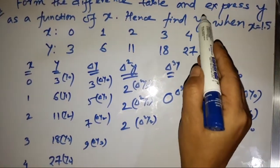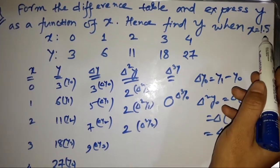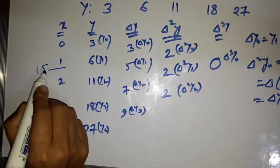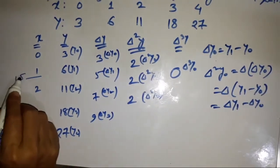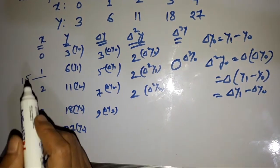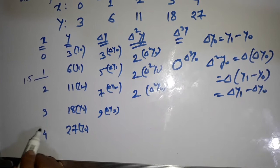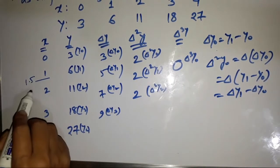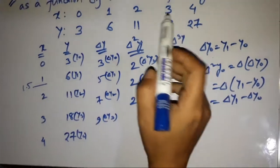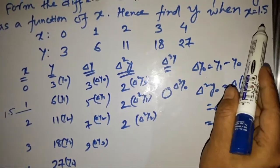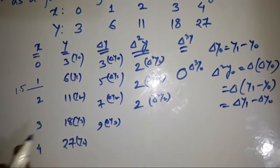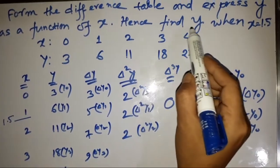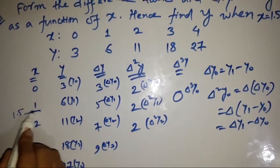We need to find Y when X = 1.5. Since 1.5 lies between 1 and 2, it is near the beginning of the table, so we use Newton forward interpolation. If instead we had X = 3.7, which lies near the end of the table (between 3 and 4), we would use Newton backward interpolation. Since X = 1.5 is at the beginning, we use the forward method.